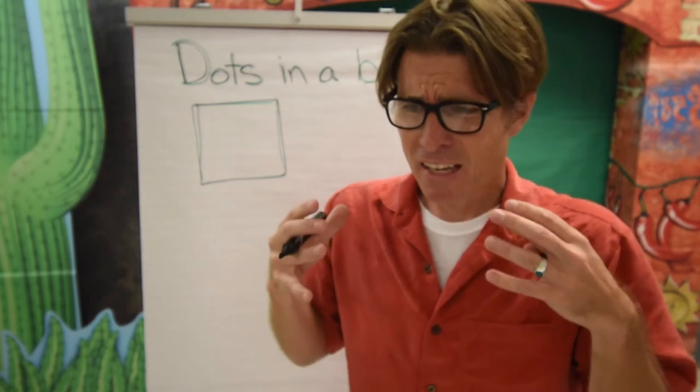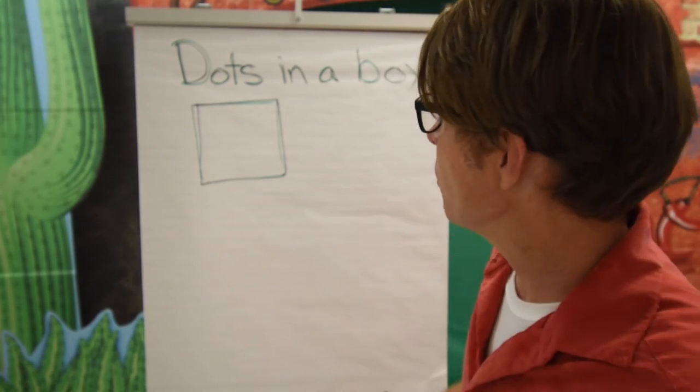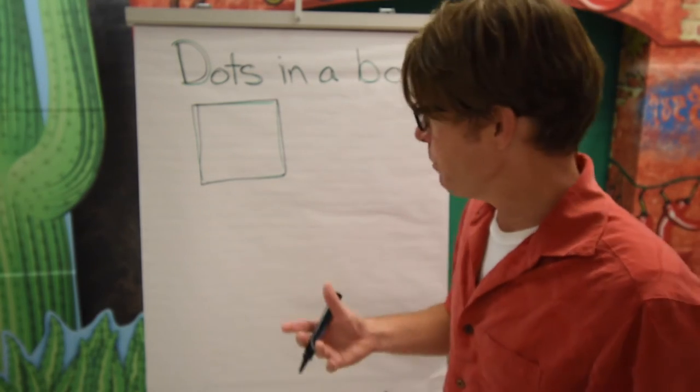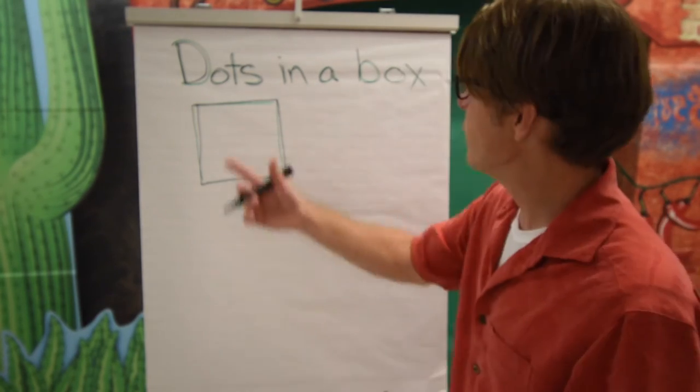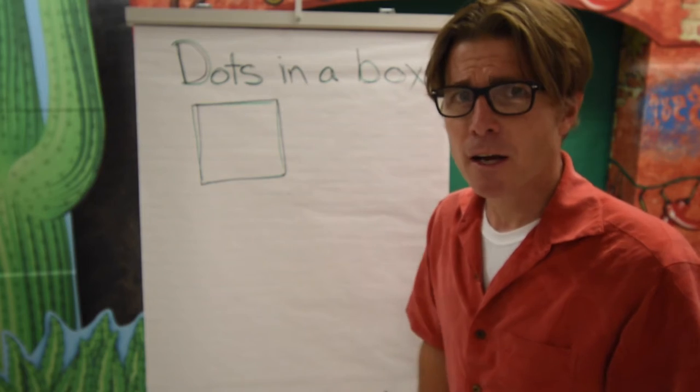We're going to practice dot-in-the-box. Let's take a look at exactly how dot-in-the-box works. For this activity we'll need a piece of paper and something to write with.